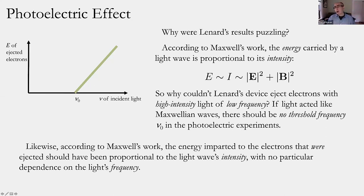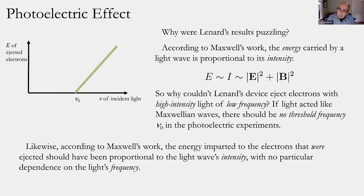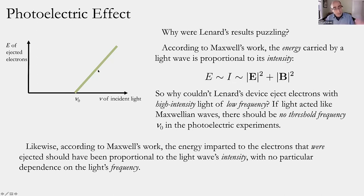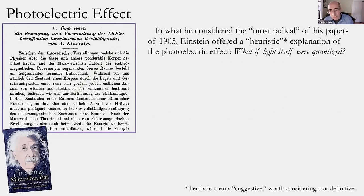Why was that strange? If one took Maxwell's standard description of electromagnetic waves, the energy carried by those light waves should have been proportional to the wave's intensity, which in turn went as the square of the electric and magnetic field strengths. So why couldn't Lenard tune the intensity up high enough to eject electrons even at low frequencies? If light acted like Maxwellian waves there should be no threshold frequency at all — you could always increase the intensity of low-frequency light.